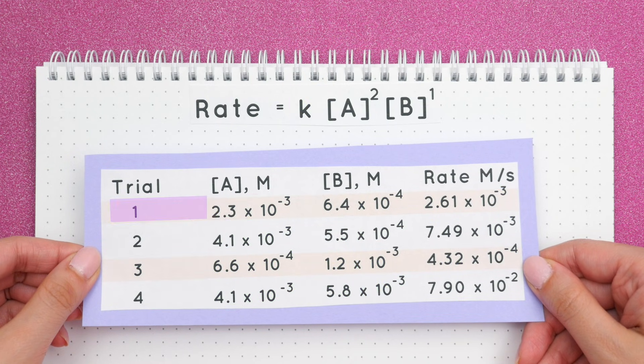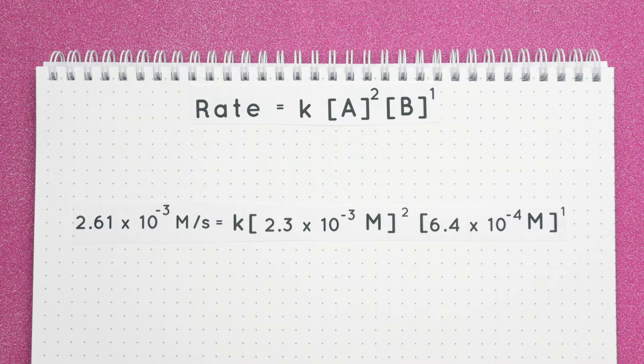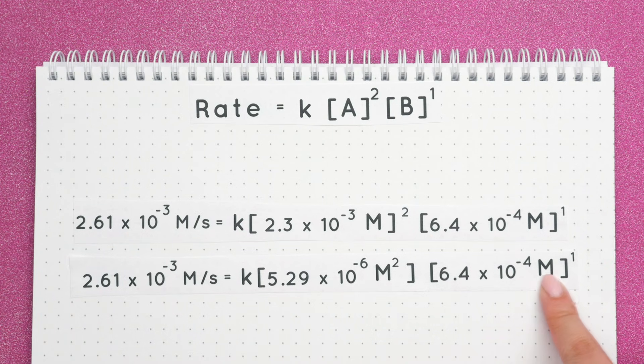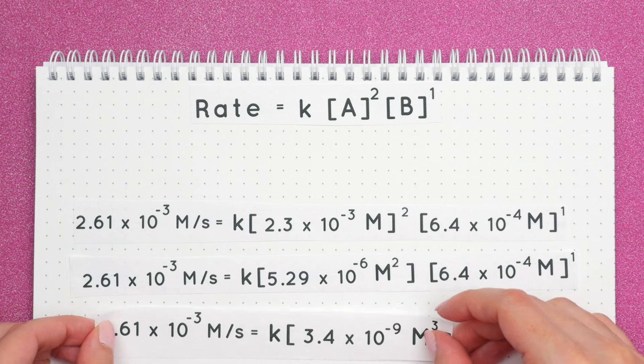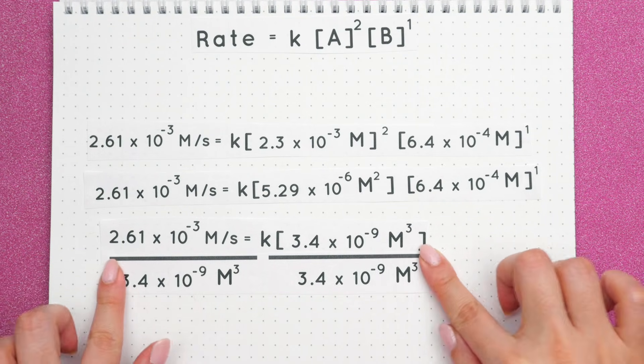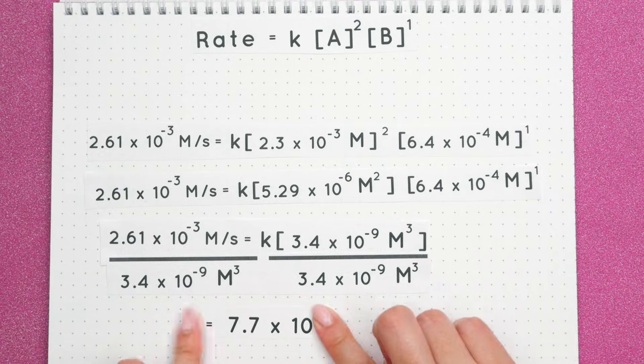Let's start with trial 1. When we plug in all the values, we'll get this. Square this value and we'll get our new value. Multiply the right side to get this. Divide both sides by 3.4 times 10 to the negative 9th and we'll get this value for k, but let's not forget about our units.